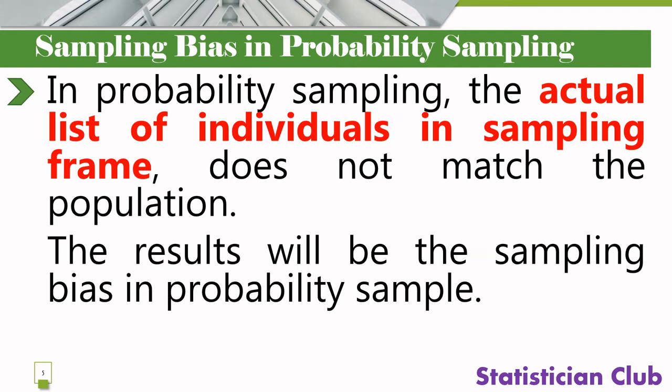Sampling bias in probability sampling: in probability sampling, the actual list of individuals in the sampling frame does not match the population. As you know, a sampling frame constitutes the list of elements obtained from the sample drawn from the population, and these sample members should resemble the elements of the population. But if the actual list of individuals in the sampling frame does not match the population, the result will be sampling bias in probability sampling.